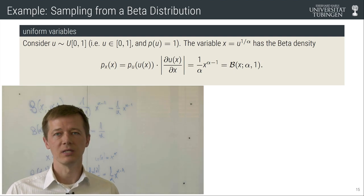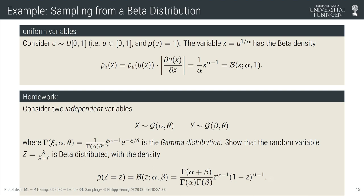As a homework problem, you'll show that to draw from a full Beta(alpha, beta) distribution, one approach is to consider two gamma-distributed random variables rather than uniform ones. This hints at the next topic: more sophisticated sampling strategies for distributions that resist simple inversion.